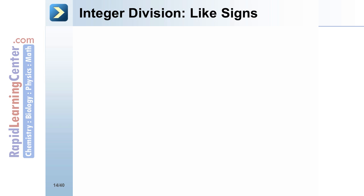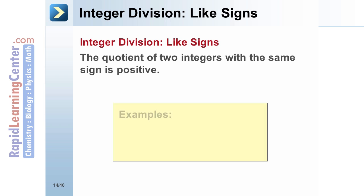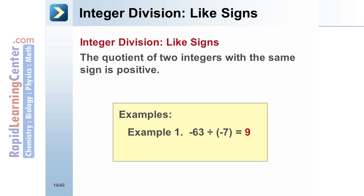Integer Division — Like Signs: The quotient of two integers with the same sign is positive. Example 1: Negative 63 divided by negative 7 equals 9. Example 2: 63 divided by 7 also equals 9.